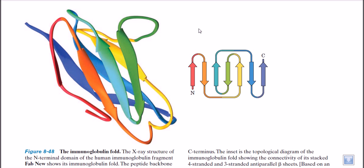A protein fold is the interaction of those motifs to make a functional three-dimensional protein molecule. To make a properly functional protein, it has to have a proper protein fold. We have motifs like alpha-beta-alpha, beta-beta, and other types. Arranging those motifs and the overlapping interactions of those motifs with each other finally makes the protein fold.